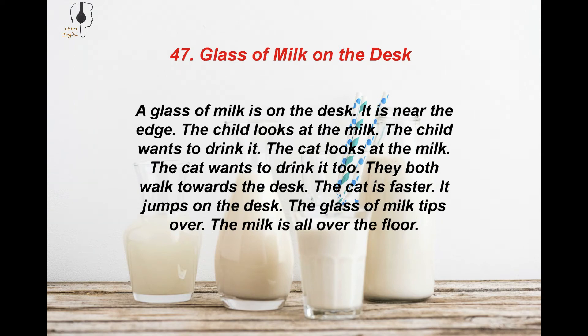A glass of milk is on the desk. It is near the edge. The child looks at the milk. The child wants to drink it. The cat looks at the milk. The cat wants to drink it too. They both walk towards the desk. The cat is faster. It jumps on the desk. The glass of milk tips over. The milk is all over the floor.